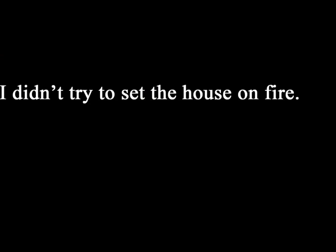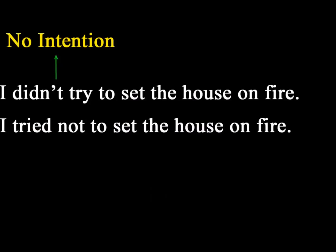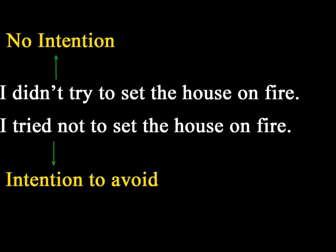There are some cases, though, where this is not true for the negative form. For instance, the verb 'try.' 'I didn't try to set the house on fire' means I had no intention of setting the house on fire — it was an accident. Whereas 'I tried not to set the house on fire' means I had the intention to avoid setting the house on fire — that's why I was so careful with the candle. The reason why these cases break the rule is that there's a difference in meaning between one version and the other. As long as students understand that difference, this type of exception should not be a problem.